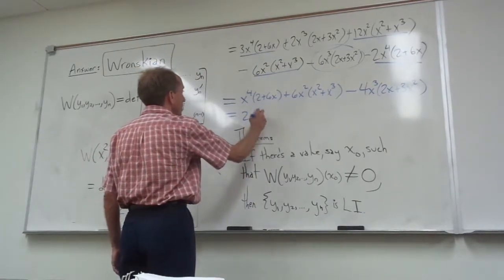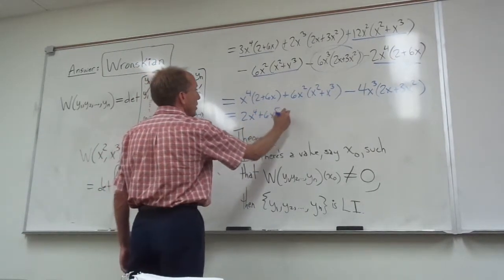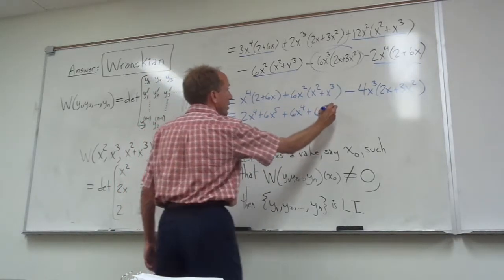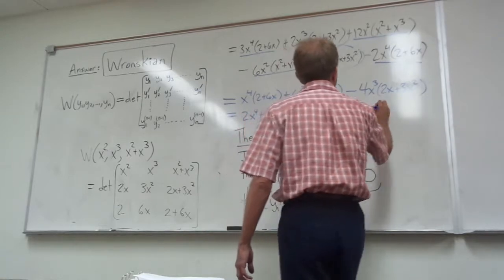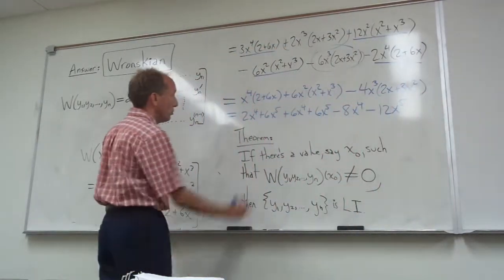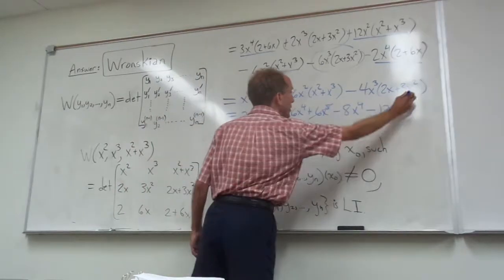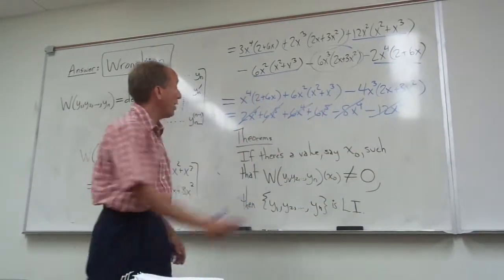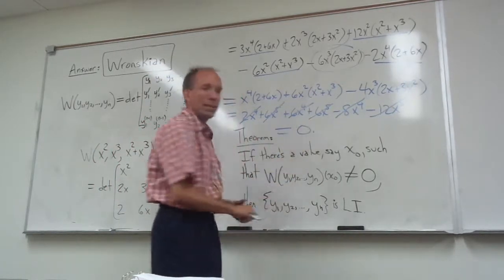2x to the fourth plus 6x to the fifth plus 6x to the fourth plus 6x to the fifth minus 8x to the fourth minus 12x to the fifth. What does that all come out to? The x to the fifth terms cancel, and the x to the fourth terms cancel. They all cancel out and just leave you with zero.